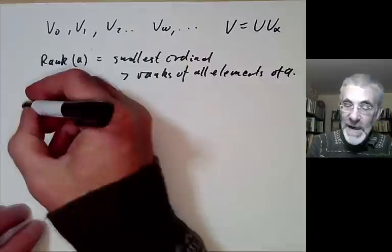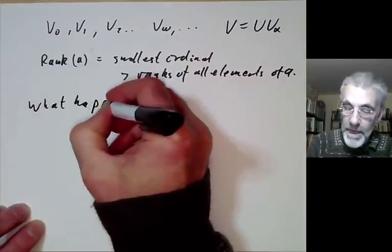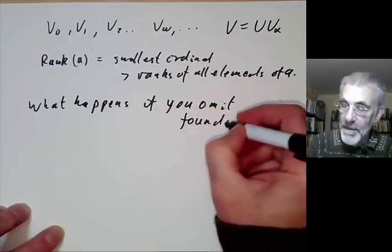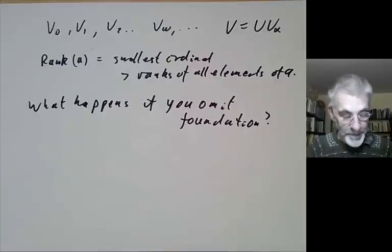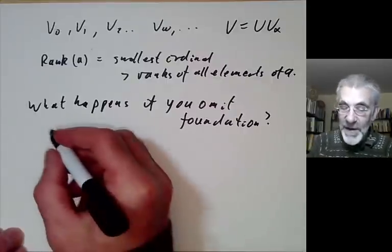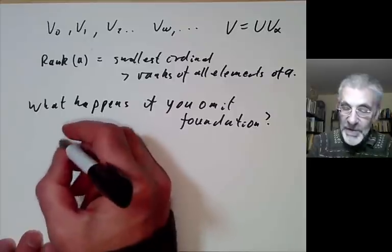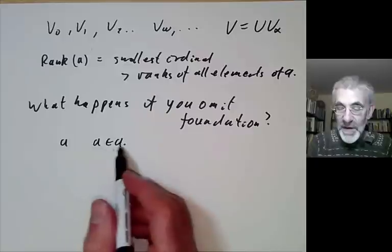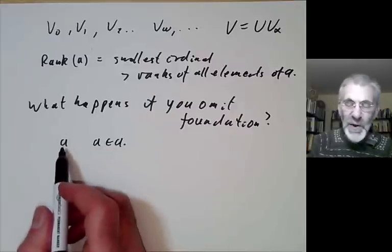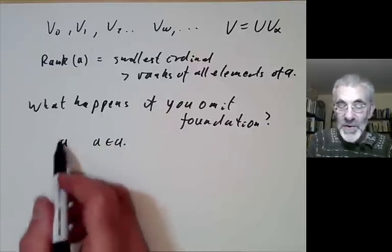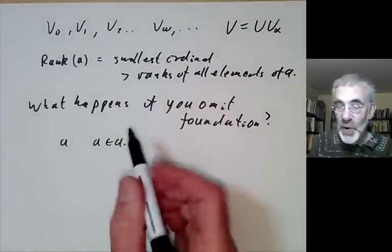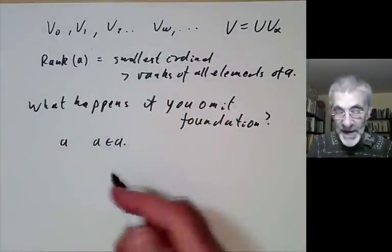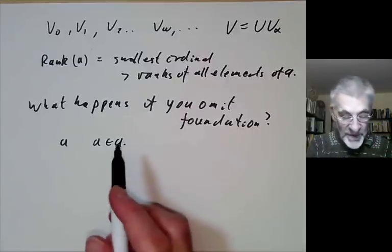So what happens if you omit the axiom of foundation? Well, first of all you can get non-well-founded sets. For example, you can just say there's going to be an element a such that a is a member of itself. You can sort of treat it like an atom in some ways, and then build up a von Neumann hierarchy starting with this set A instead of with the empty set, giving you a model not satisfying the axiom of foundation.